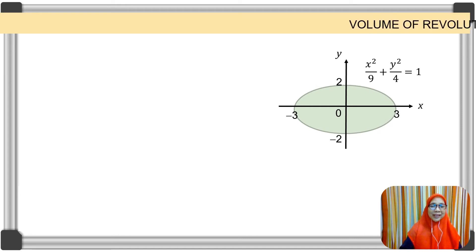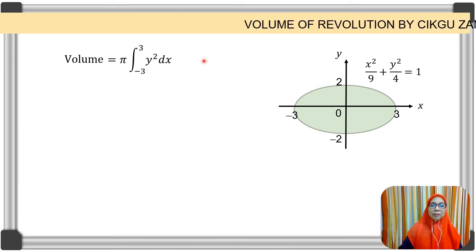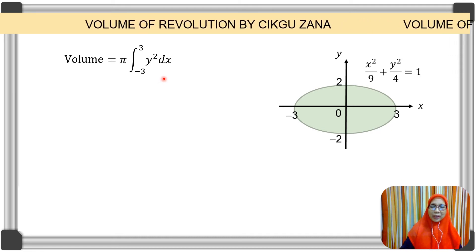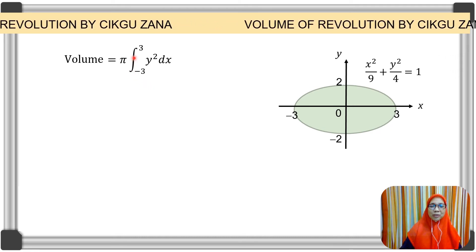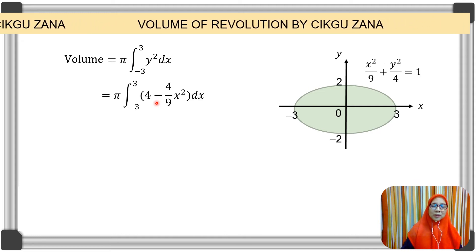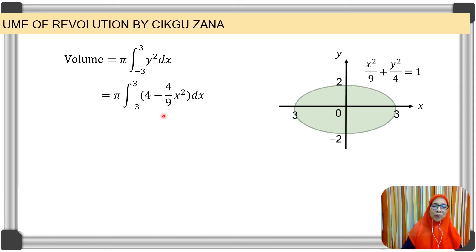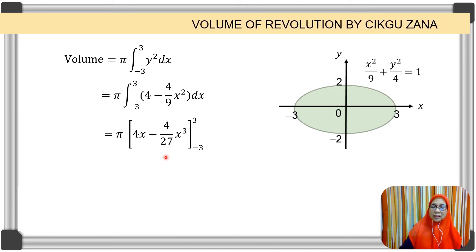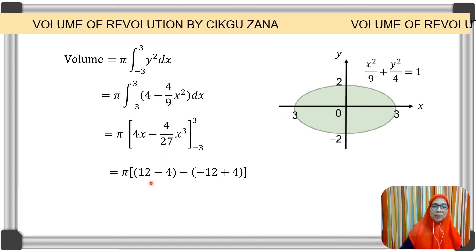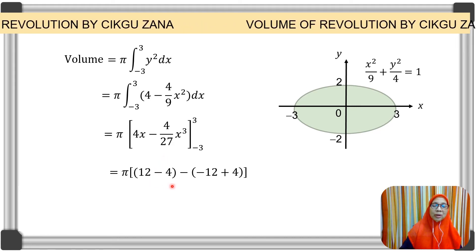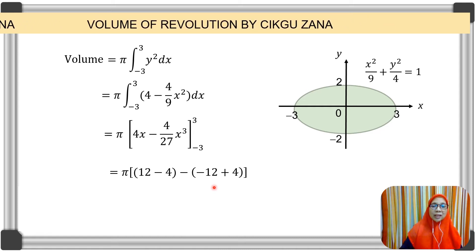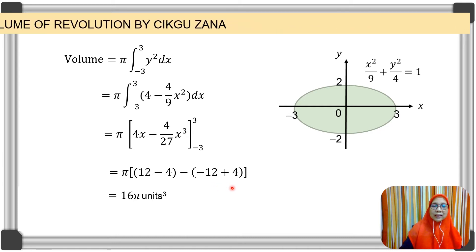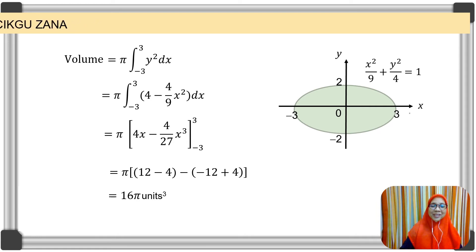The volume of revolution is V = π times the integral of y² with respect to x from x = -3 to x = 3. Substituting y² = 4 - (4/9)x², and integrating, we get 4x - (4x³/27). Substituting the upper limits: 12 - 4. Substituting the lower limits: -12 + 4. Thus, the volume is 16π units cubed.